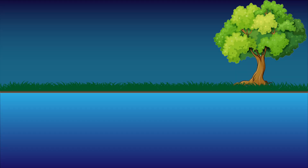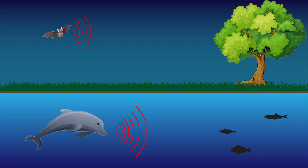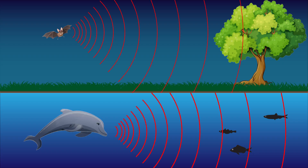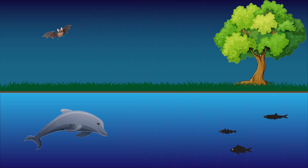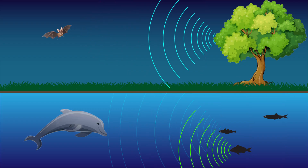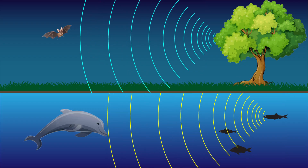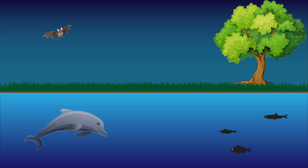An ultrasonic sensor can detect the distance of an object within its range without requiring physical contact. In nature, dolphins and bats are two animals that can detect their surroundings by using echolocation. Both creatures emit sound waves which echo off nearby objects, bouncing waves back towards the animals.